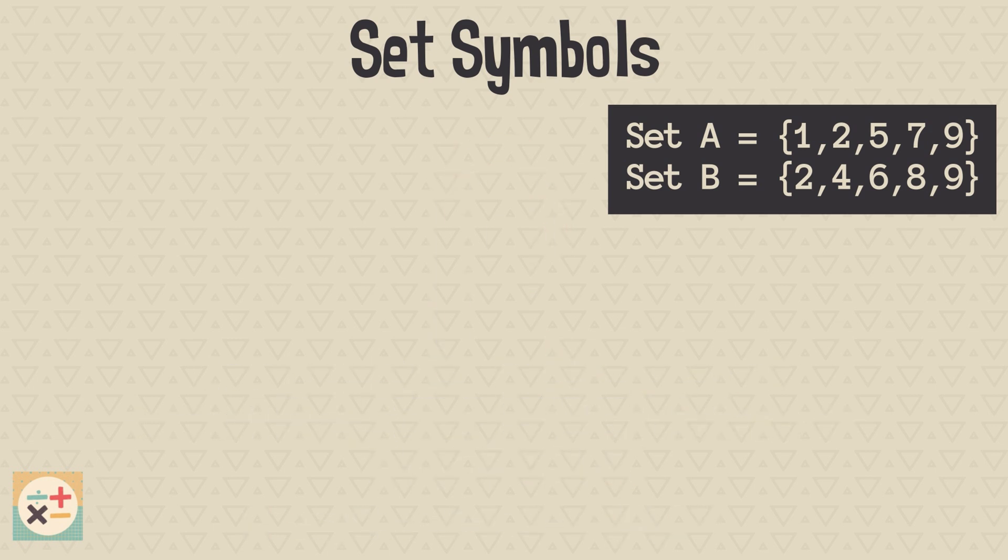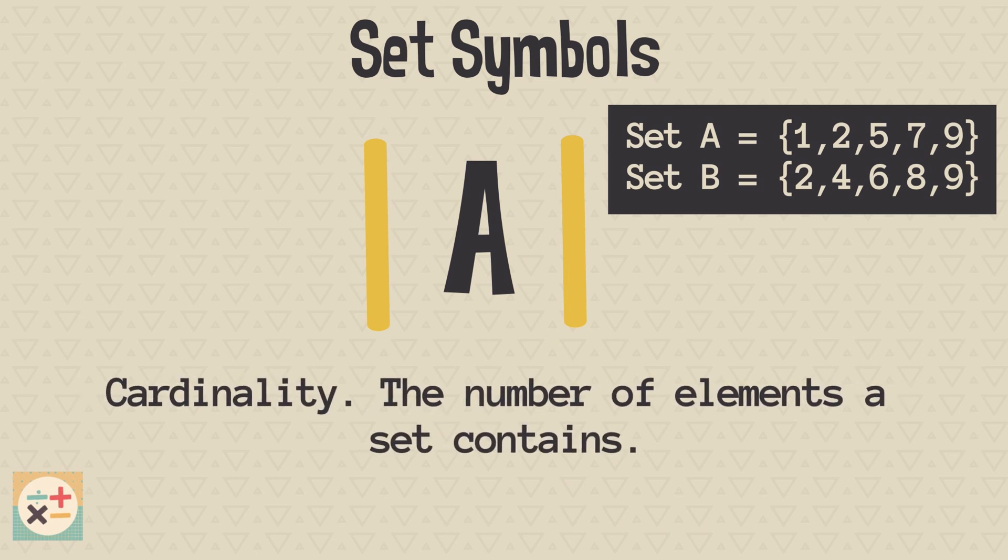Next up we have the symbol which represents cardinality. Cardinality is a fancy word for the number of elements in a set. For example, the cardinality of set B is 5, as there are 5 elements in set B.